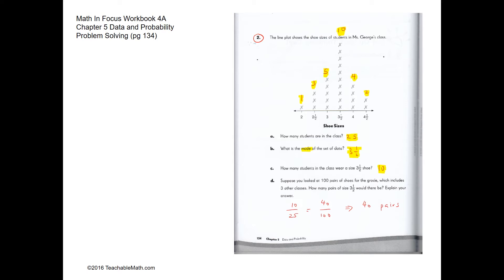Out of 25 students, ten wear size 3.5. Using the same probability, out of 100 students, 40 will be wearing size 3.5. We solve this using equivalent fractions: 10 over 25 equals 40 over 100, multiplying both numerator and denominator by 4. So the answer is 40.